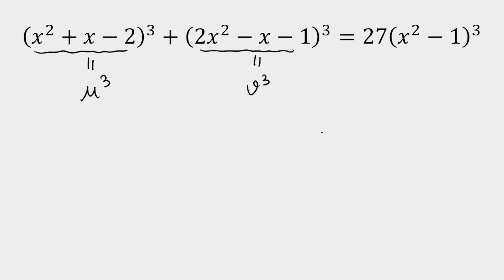Now observe what's written on the right hand side. If I add these two numbers, u + v will equal—if you add here, you get 3x² + x - x, which cancels, and you get -3. Let's re-modify this and take 3 common. So we get (x² - 1) multiplied by 3.